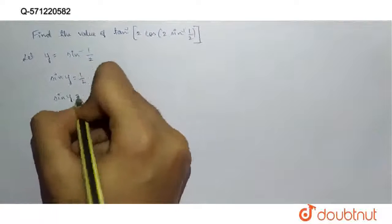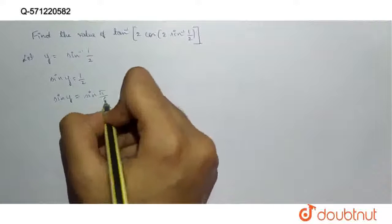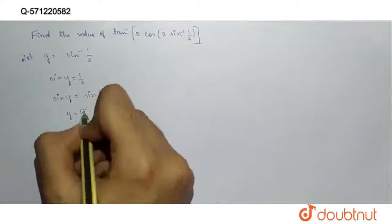Also, sin y equals 1 by 2 can be written as sin pi by 6, that is sin 30 degree. Then, y will be equal to pi by 6.